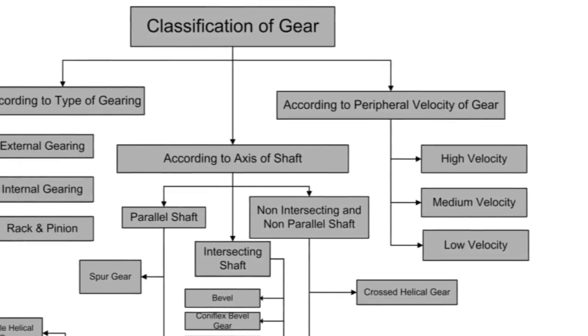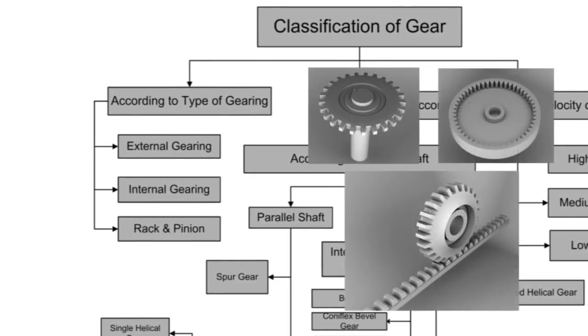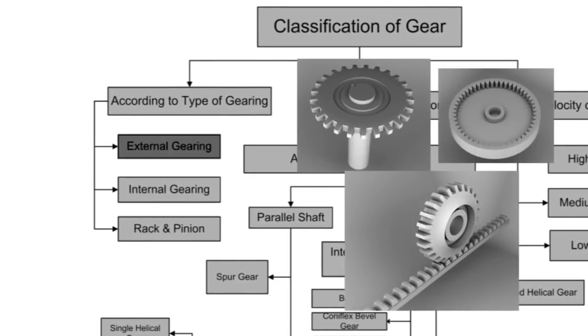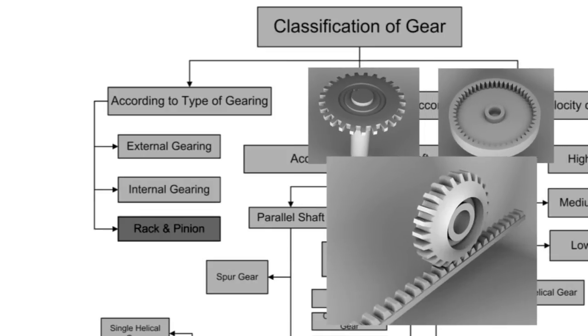According to the types of gearing, gears are classified into three groups: external gearing, internal gearing, and rack and pinion gears.